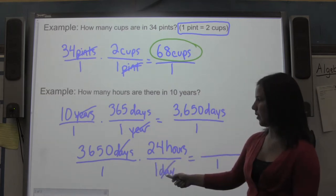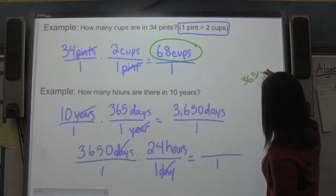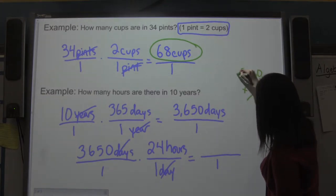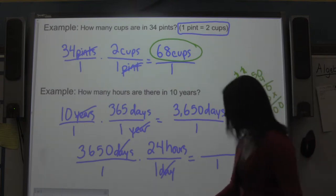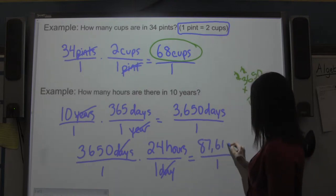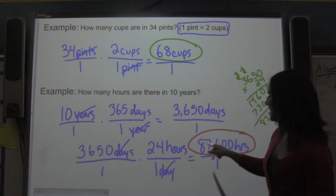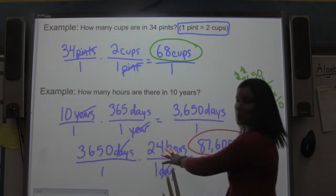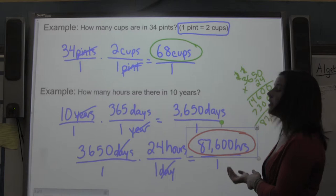After days cancel, I have 1 in the denominator and 3,650 times 24 in the numerator, giving me 87,600 hours. So there are 87,600 hours in 10 years. I took 10 years and multiplied it by 1, then by 1 again. Those values aren't different — they just look different because one talks about years and one talks about hours.